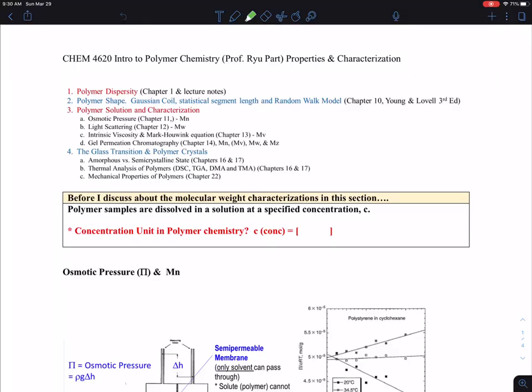Okay, so let me talk about section 3. It's about polymer solution and characterization. In this section, I'm going to talk about osmotic pressure, which is related to number average molecular weight. So far, we have talked about polymer dispersity and the polymer shapes and size, and talked about the radius of gyration and end-to-end distance and the random walk model. But now, really about something about the characterization.